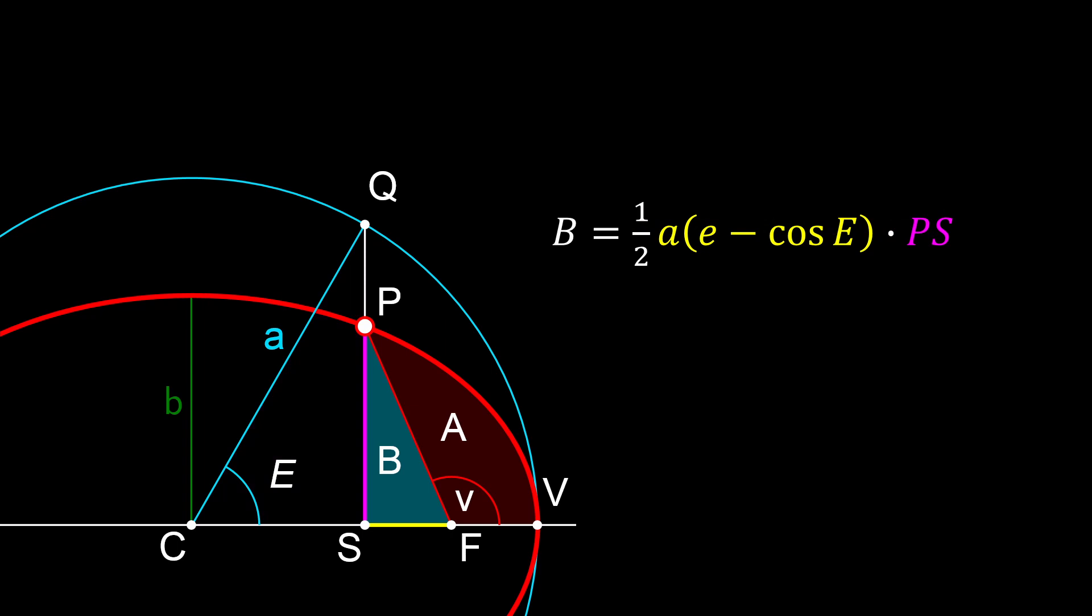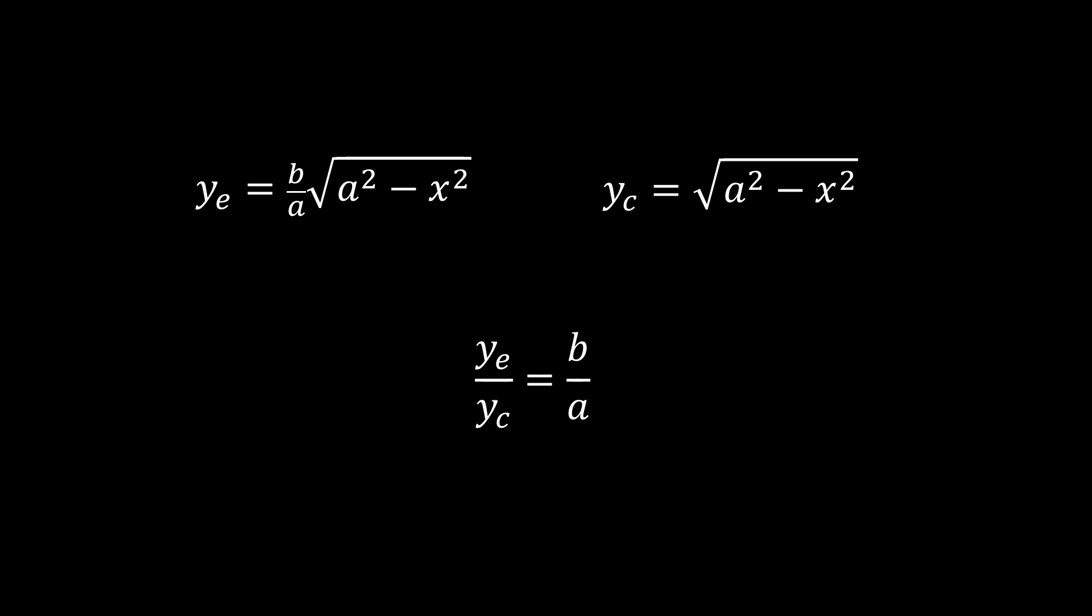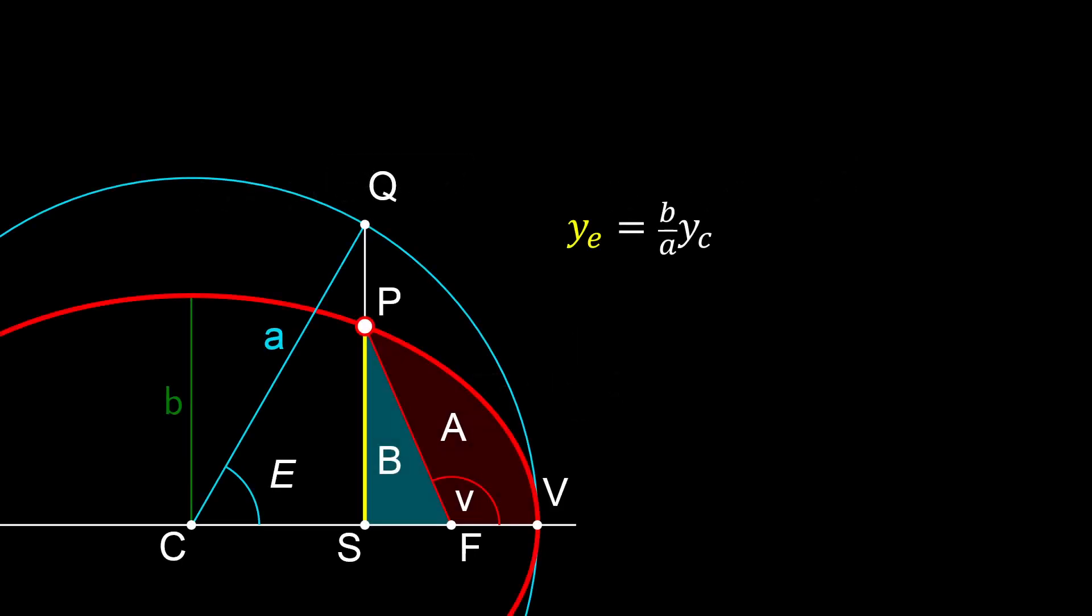As for the height ps, look to the equations in Cartesian coordinates for an ellipse and a circle. Solving for y in the ellipse yields this, solving for y in the circle yields this. The ratio of y ellipse to y circle is simply b over a, the semi-minor over semi-major axis. Since qs is simply a times the sine of the eccentric anomaly, ps then is just b over a multiplied by that, or just b times the sine of the eccentric anomaly. So the area b here is one half of a times the eccentricity minus a times the cosine of the eccentric anomaly times b times the sine of the eccentric anomaly, which simplifies to this.